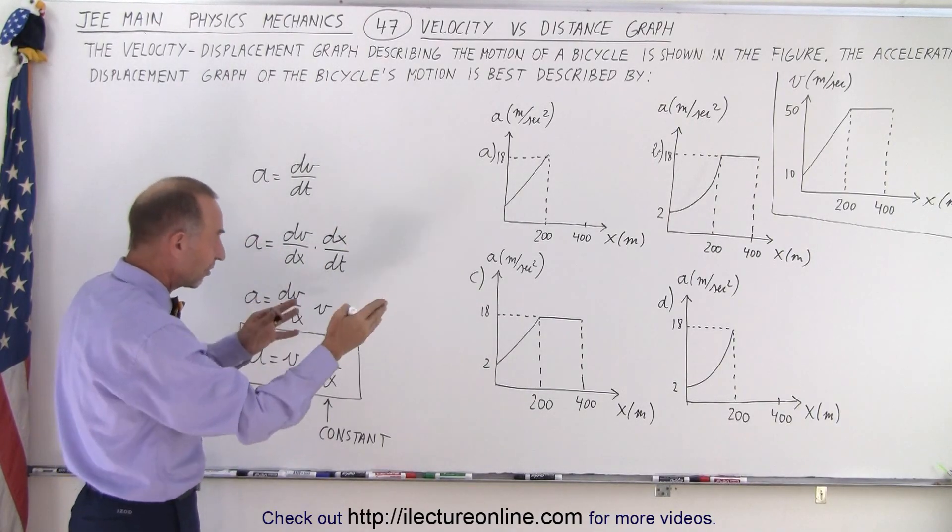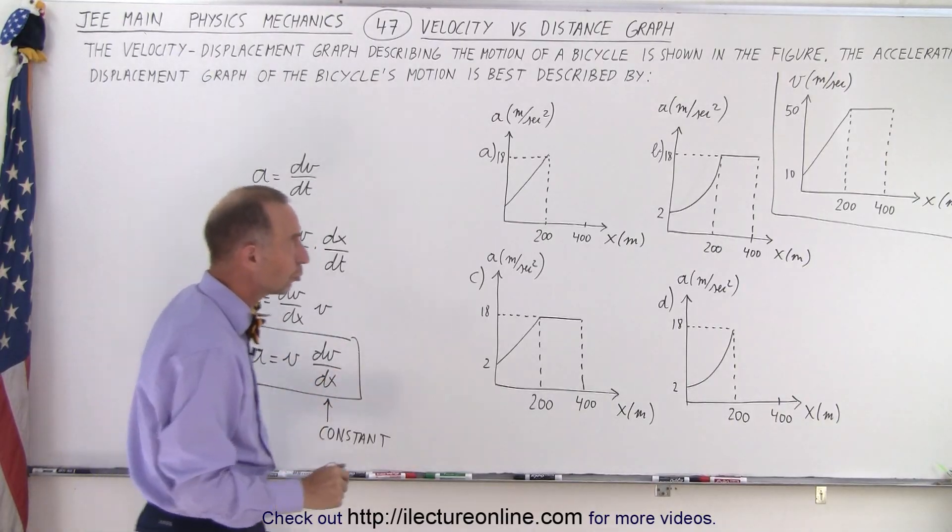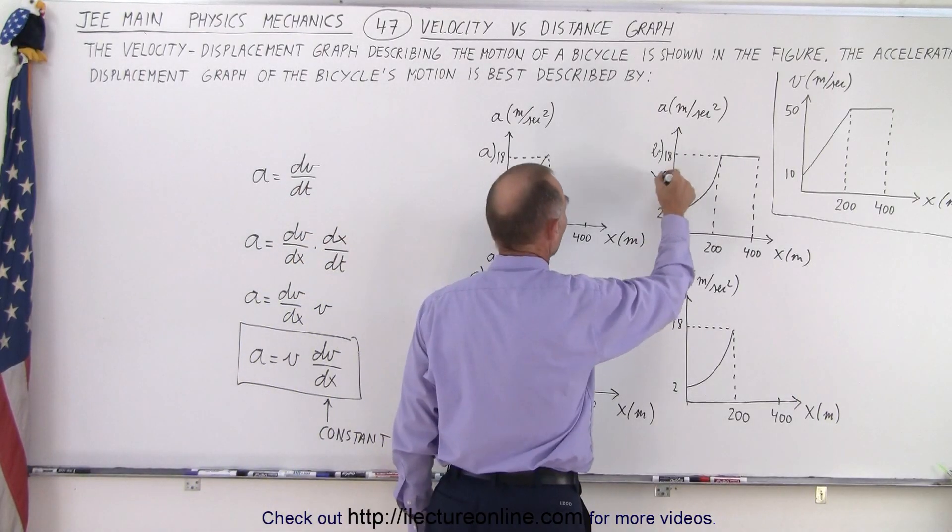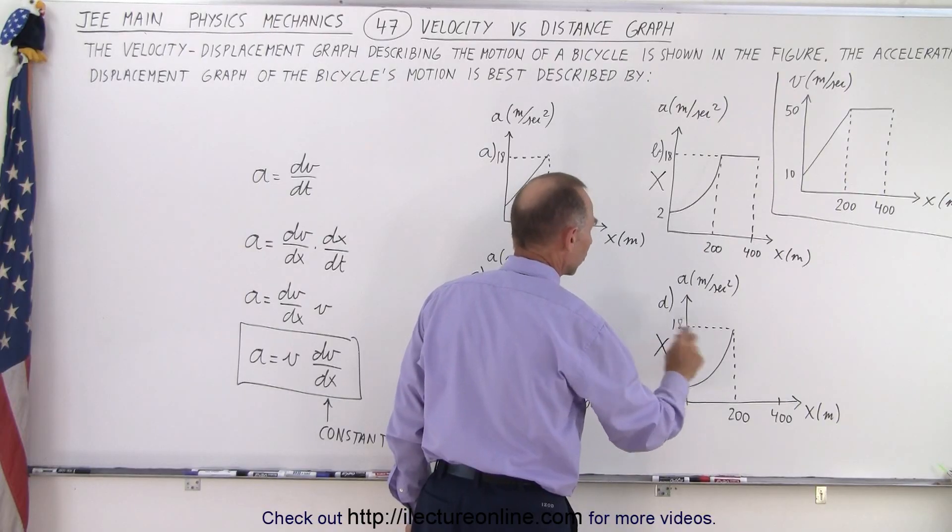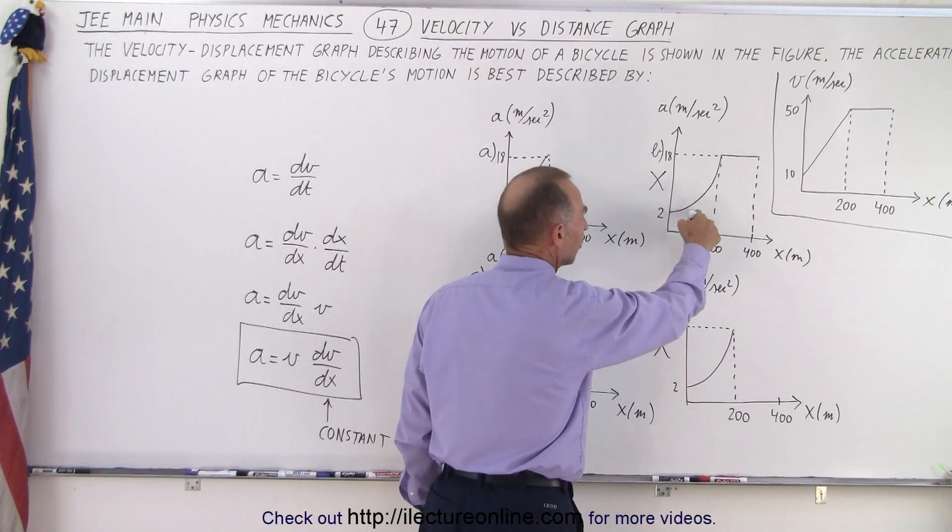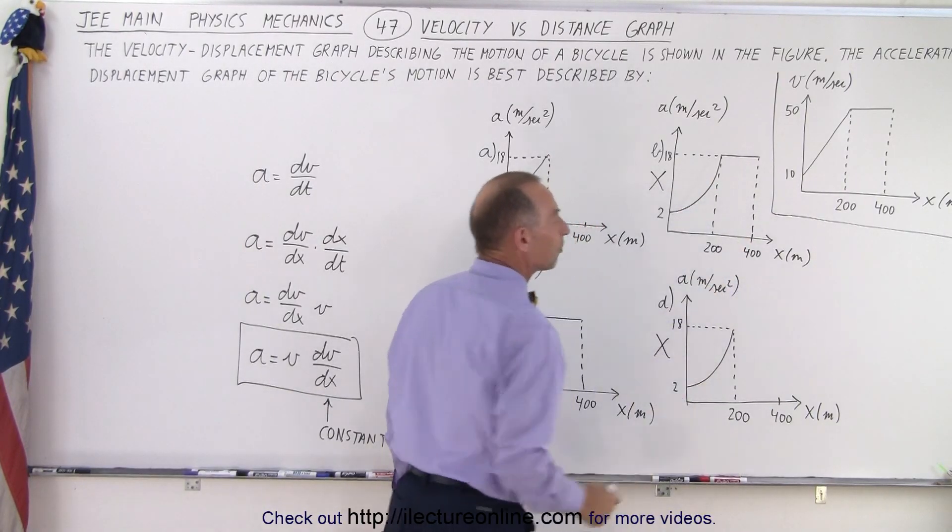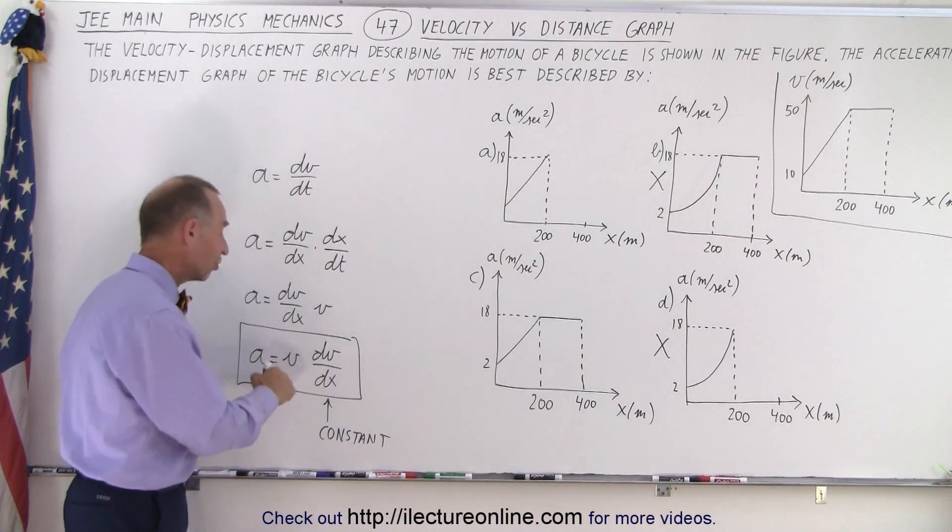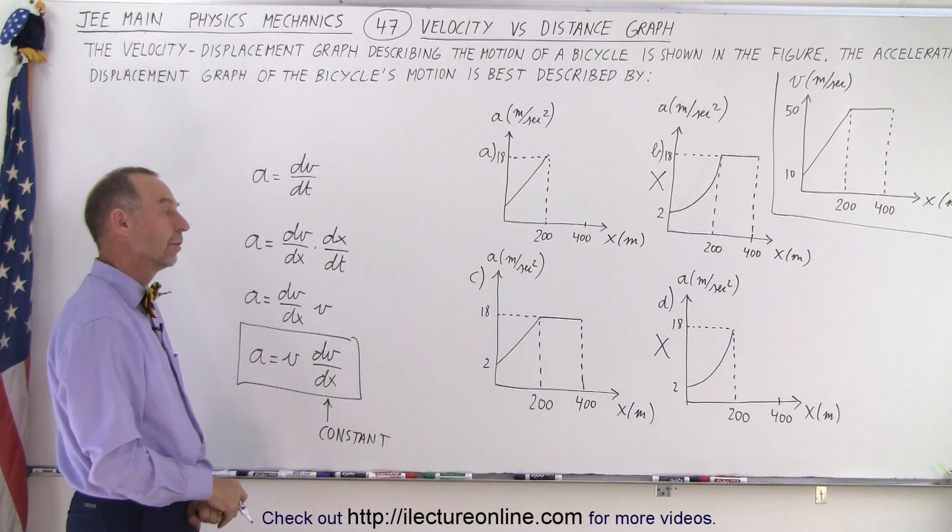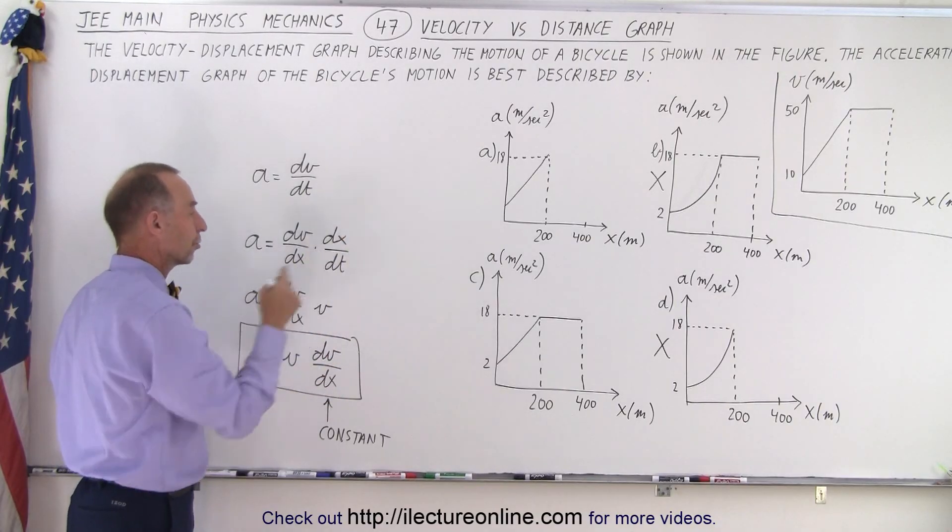So any representation where a doesn't change linearly is not part of the solution, which means b is not part of the solution and d is not part of the solution because a does not change linearly with respect to x. And this tells us that it should based upon our graph. So then it's either a or c.